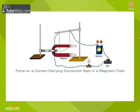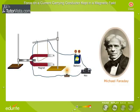Force on a current carrying conductor kept in a magnetic field. In 1821, Michael Faraday demonstrated that if an electric current is flowing through a conductor placed between the poles of a horseshoe magnet, it experiences a force.